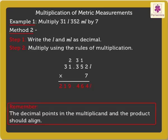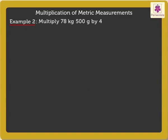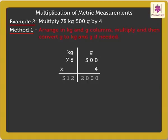Let's try one more example. Why not use the first method here? Here, we arrange in kilograms and grams columns, multiply and then convert grams to kilograms and grams if needed. On multiplying, we get 312 kilograms and 2000 grams.